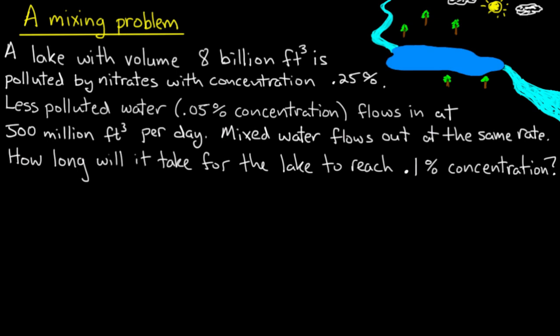Let's take a look at a mixing problem. Suppose we have a lake here, and this lake has a volume of 8 billion cubic feet. Unfortunately it's polluted by nitrates, and those nitrates have a concentration of 0.25%. Now flowing into this lake is a stream. It's also polluted but at a lower concentration, 0.05%.